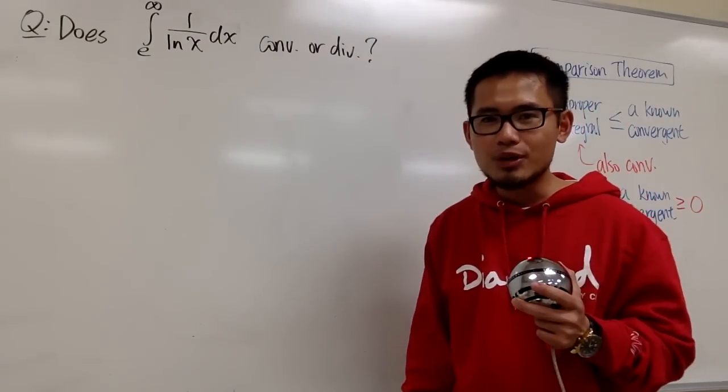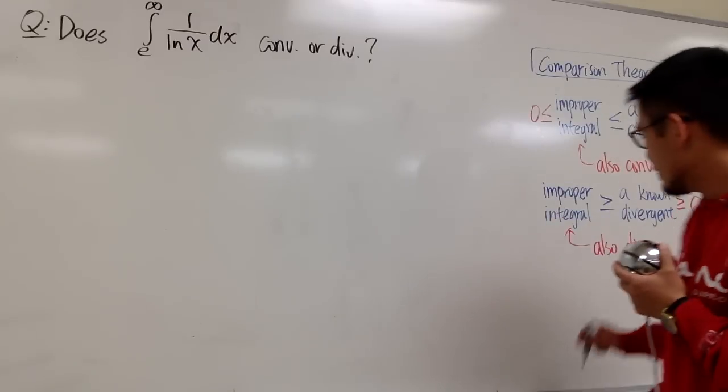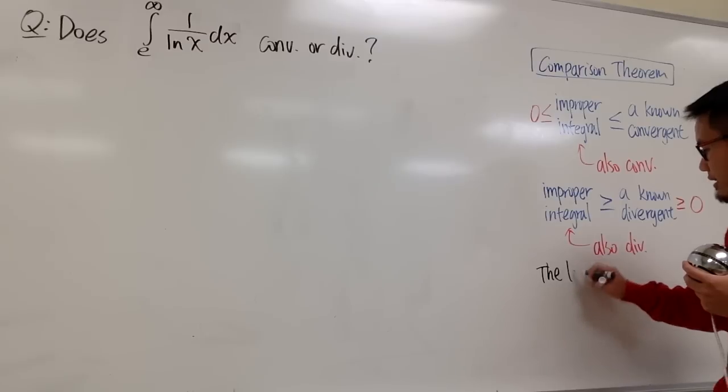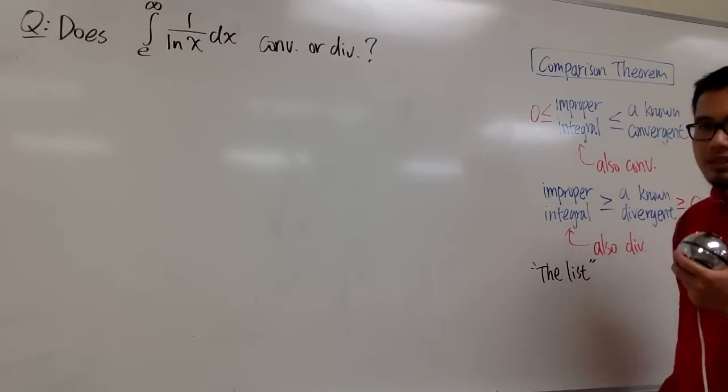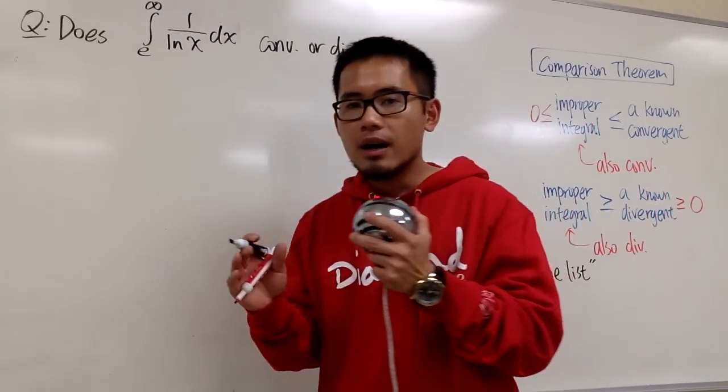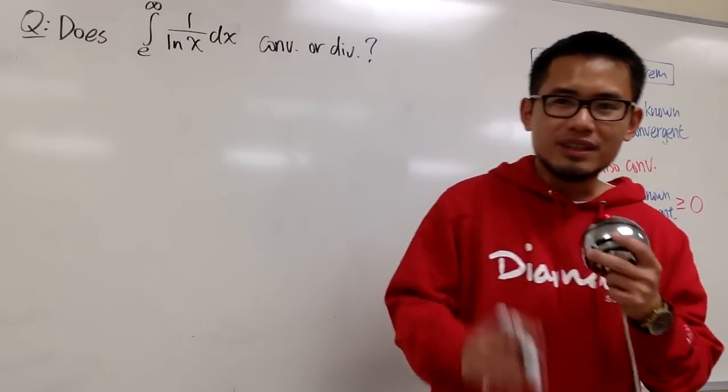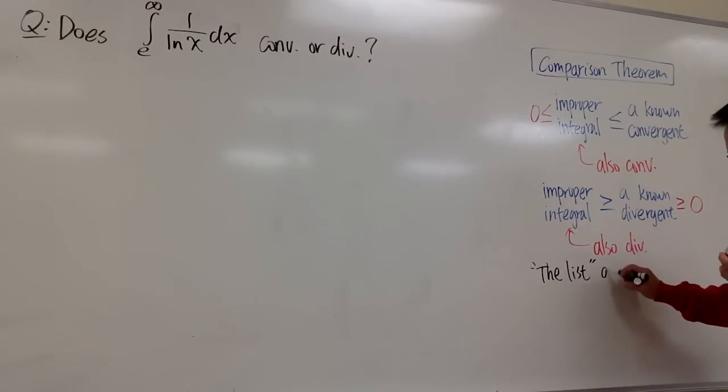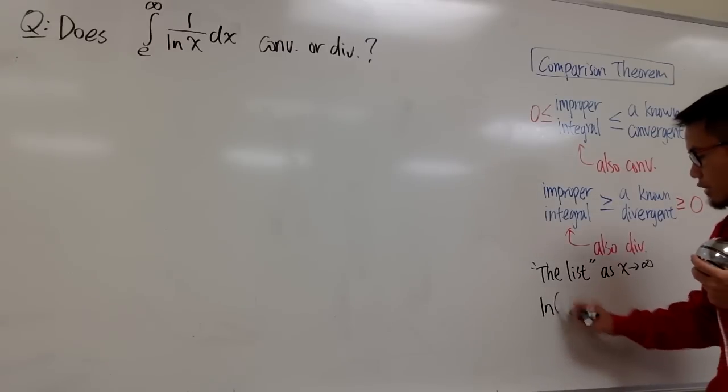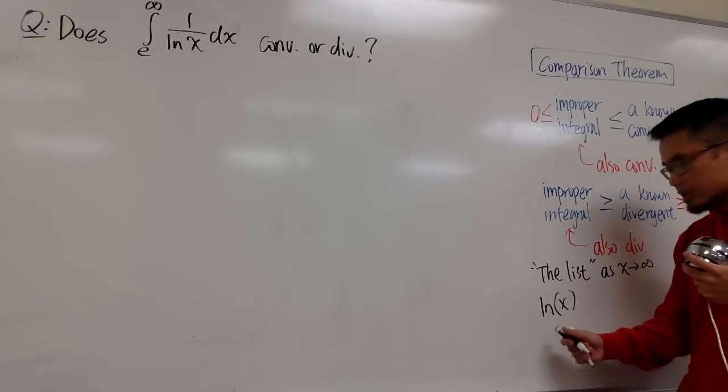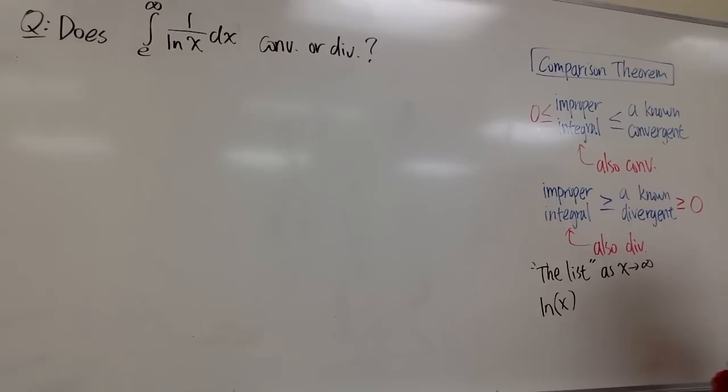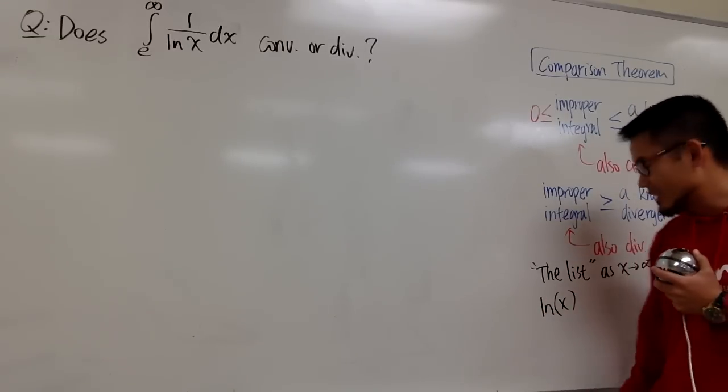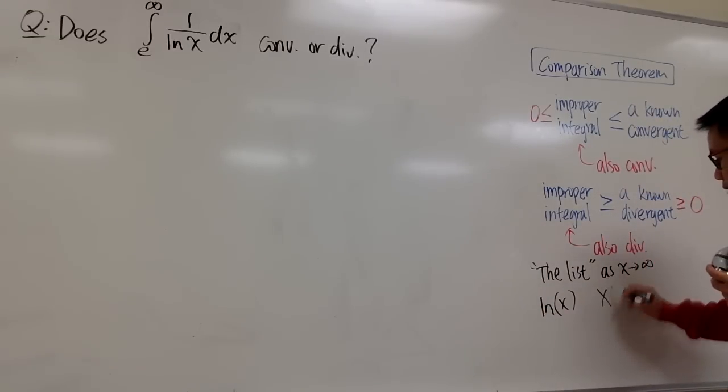Anyways, here is a good time for me to tell you guys the list. I call the following the list. And the idea of the list is that we are going to list out all the functions that go to infinity as x goes to infinity. As x goes to infinity, we note logarithms of functions, it's the smallest. So we put ln(x) right here. And the next smallest function is the power function, x to the p's power.